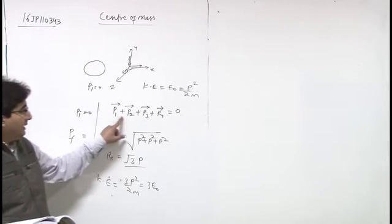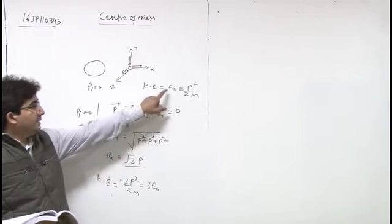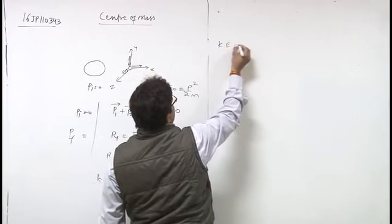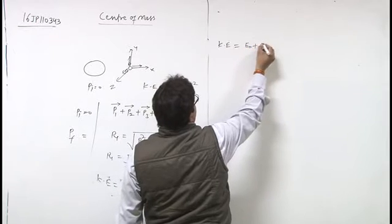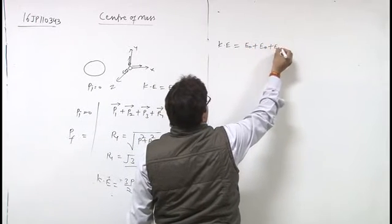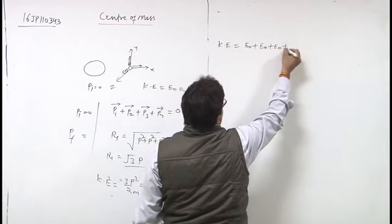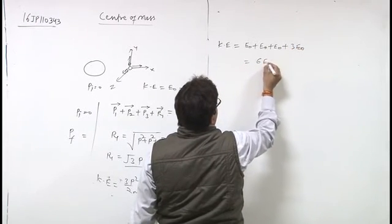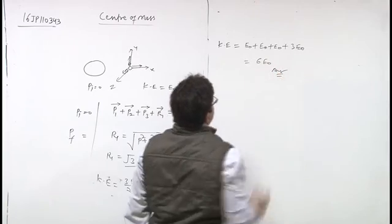The remaining three particles has kinetic energy E0. So total kinetic energy of all four particles is E0 plus E0 plus E0 (this is for three particles) and the fourth one has 3E0. So total energy is 6E0. This is the answer. Nice.